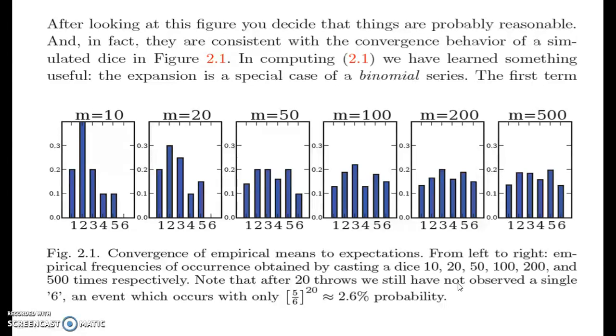In fact, they are consistent with the convergence behavior of a simulated dice in figure 2.1, we are going to discuss that here. In computing 2.1, we have learned something useful. The expansion is a special case of a binomial series. Here in the diagram, we'll see that the convergence of empirical means of expectations. From left to right, empirical frequencies of occurrence obtained by casting a dice 10 times, 20, 50, 100, 200 and 500 times respectively. First time we play with the dice for 10 times, then we play with the dice for 20 times, then 50 times, 100 times, 200 times and 500 times respectively.